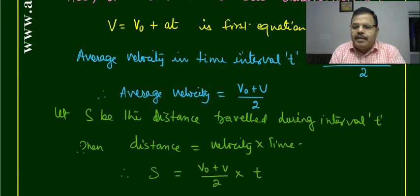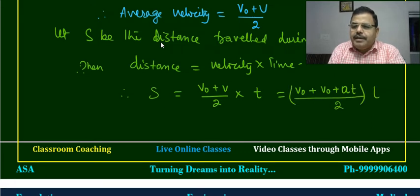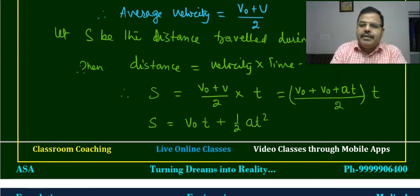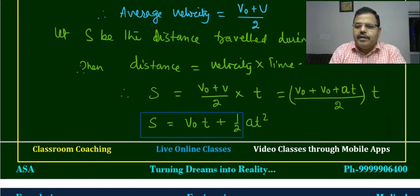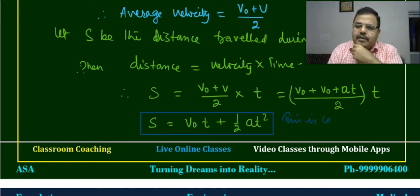So S = (v₀ + v)/2 × t. Now substituting v = v₀ + at: S = (v₀ + v₀ + at)/2 × t = (2v₀ + at)/2 × t = v₀t + ½at². This is called the second equation of motion. You can also express distance along x-axis and y-axis using position vector terms. This is the second equation of motion.